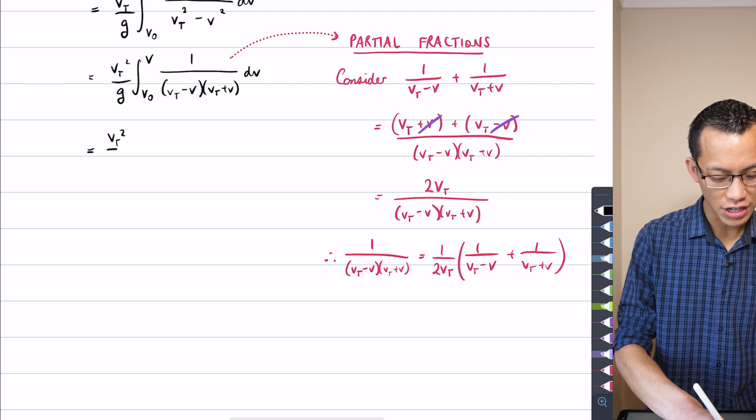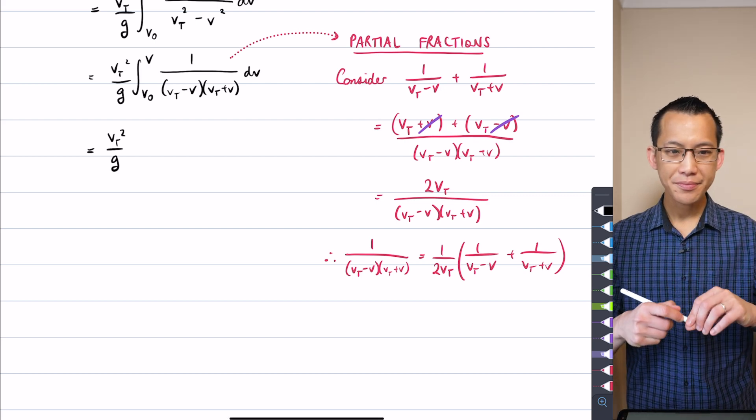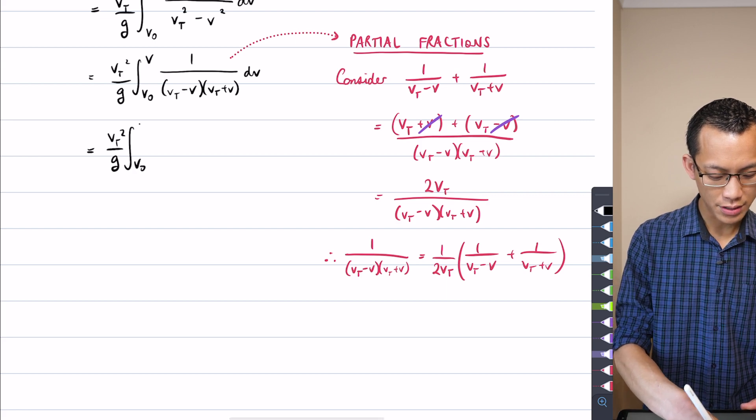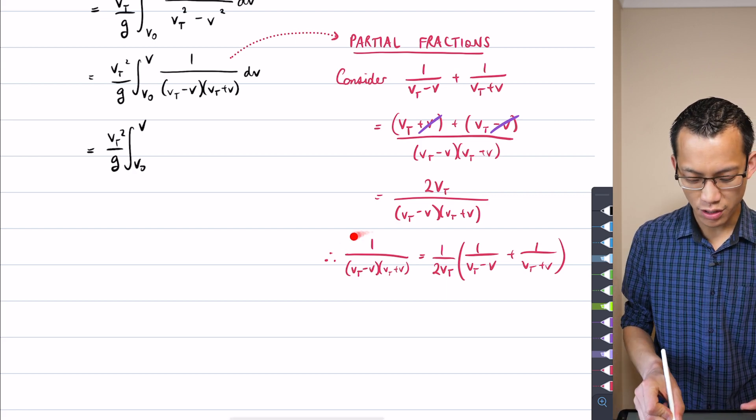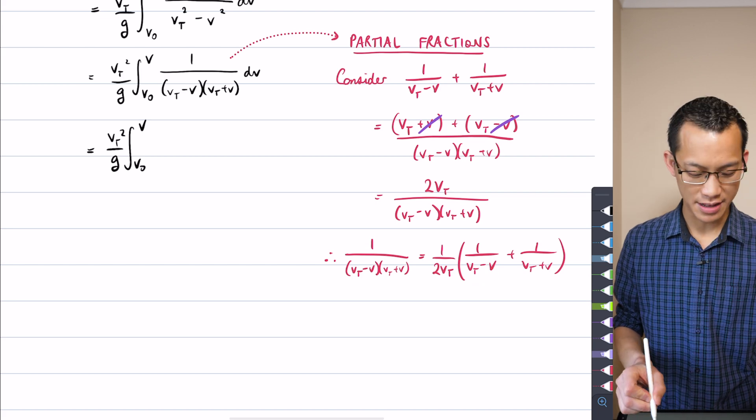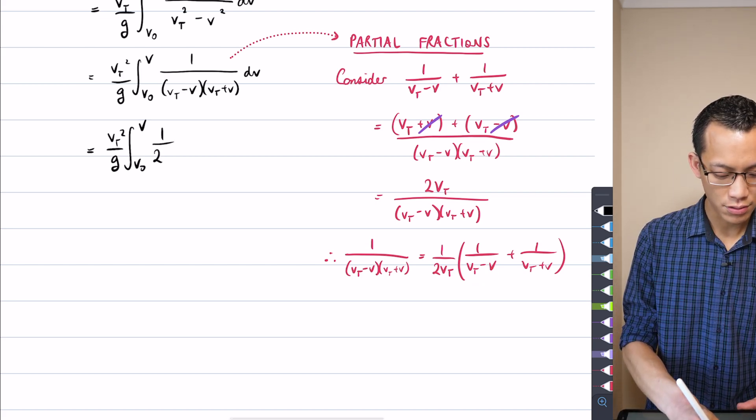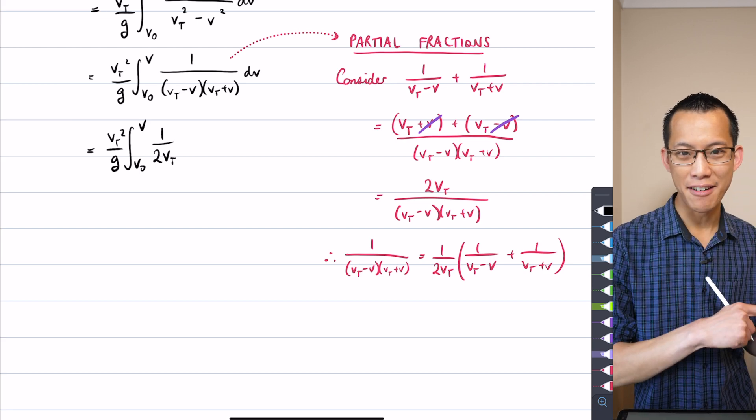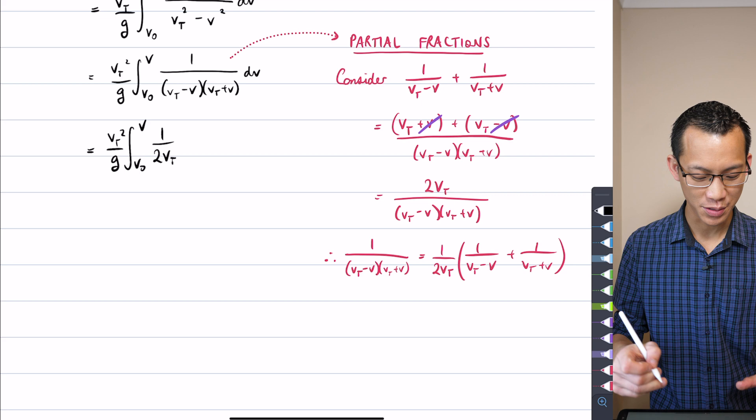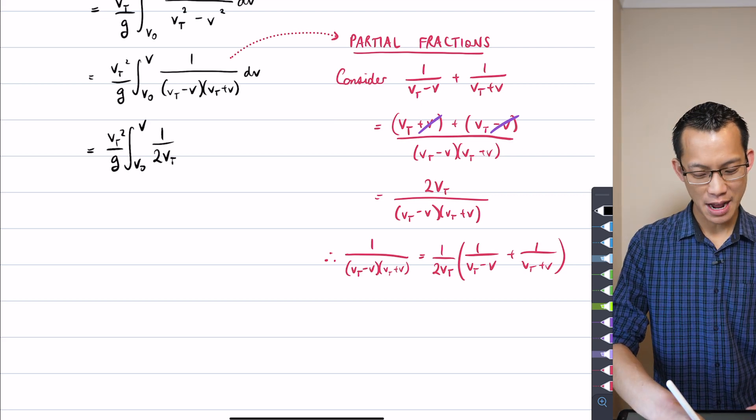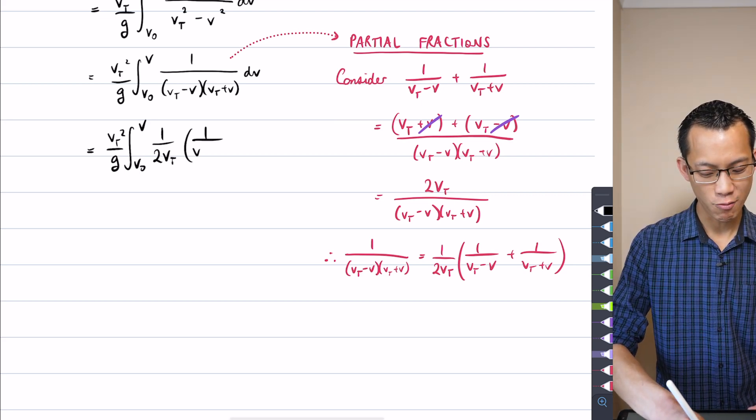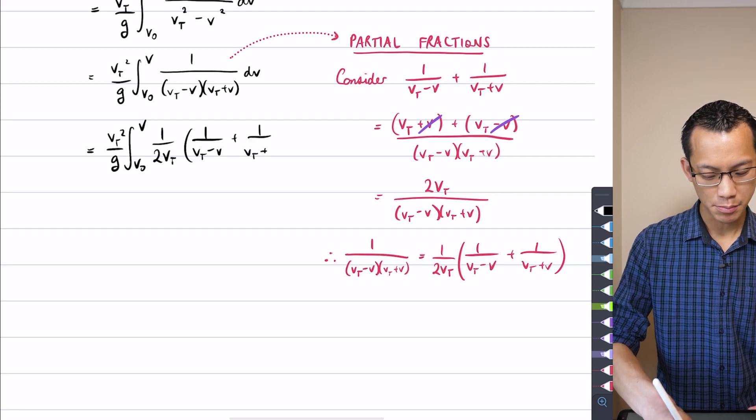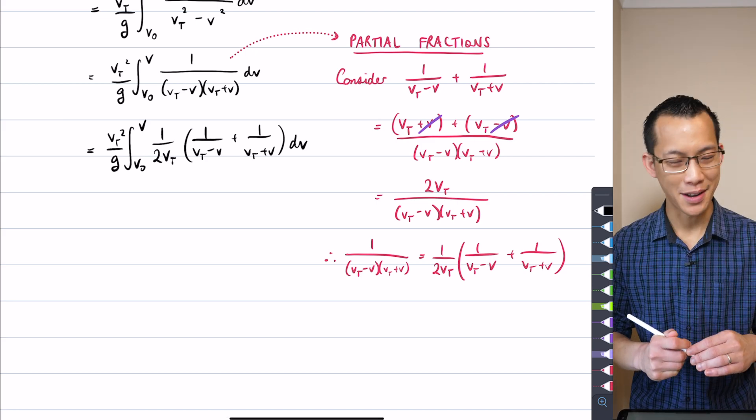I'm going to have this VT squared on G hanging out the front, and then I can say this is from V naught to V, and I'm just doing a straight substitution of this into this right-hand side. So this is going to be 1 on 2VT, and if you're paying close attention to that result we're trying to prove, this is a really good sign, you'll see why in a second, and then we get our pair of partial fractions here: 1 on VT minus V, 1 on VT plus V, all with respect to V.